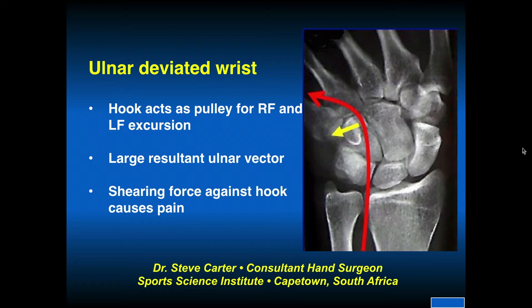In the ulnar deviated wrist, the hook of the hamate acts as a pulley. There's a large resultant ulnar vector, and there's shearing against the hook of the hamate that causes pain. Put them into ulnar deviation and resist flexion of their ring and small finger for a diagnosis.